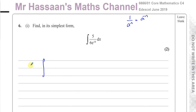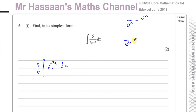I like to write constants outside, so 5 over 6 goes outside, and this will be e to the power of minus 3x, integrated with respect to x. Because 1 over e to the power of 3x is the same as e to the power of minus 3x when you rewrite it using indices. Now it's ready to be integrated.